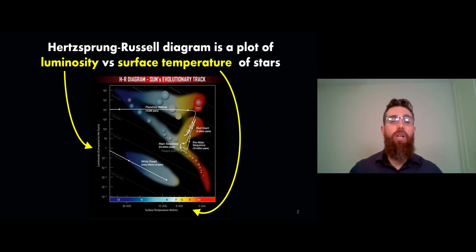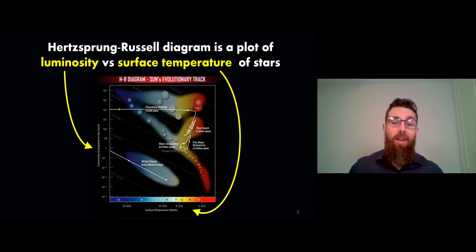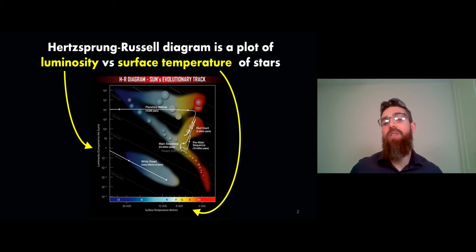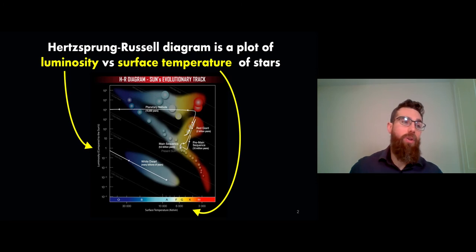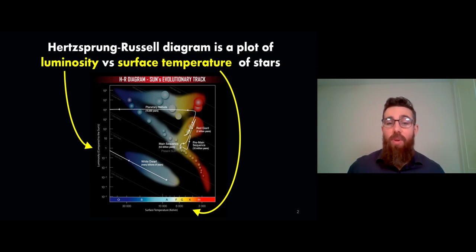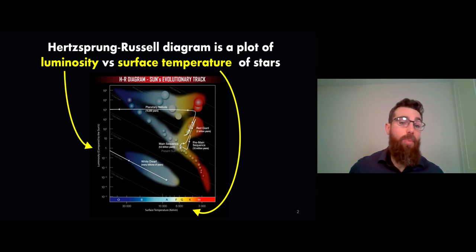Larger and less massive stars take a slightly different route, but it should make some intuitive sense why it moves the way it does - why the stars move across because they might get to a hotter surface temperature, they become more luminous or less luminous.